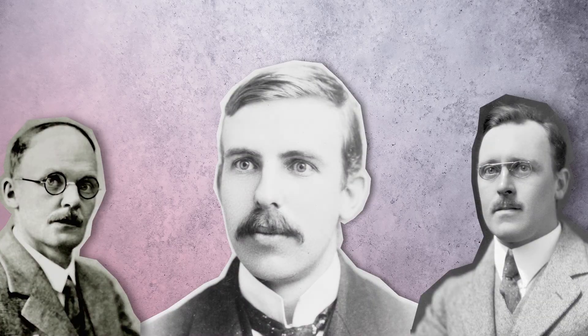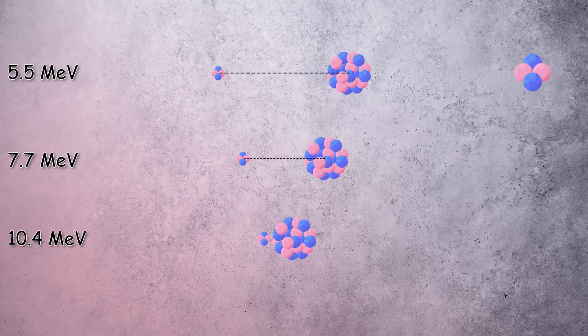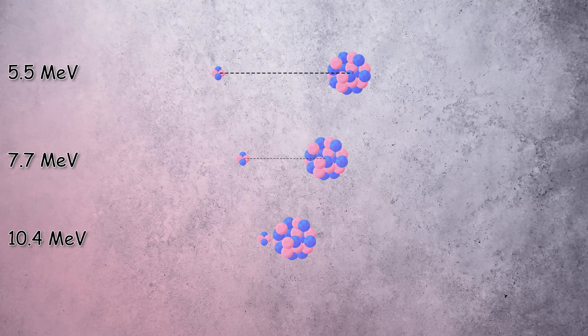More was done by Rutherford and his co-workers to find a closer estimate for the size of the nucleus. This involves performing measurements on increasingly energetic alpha particles until Rutherford's scattering formula breaks down. When it does break down, the alpha particle and the nucleus can no longer be treated as point charges, and the alpha particle is now interacting with the nucleus in a more complicated way.